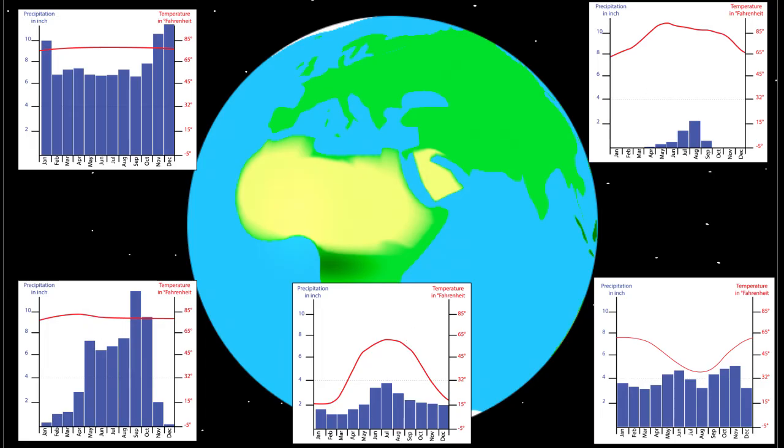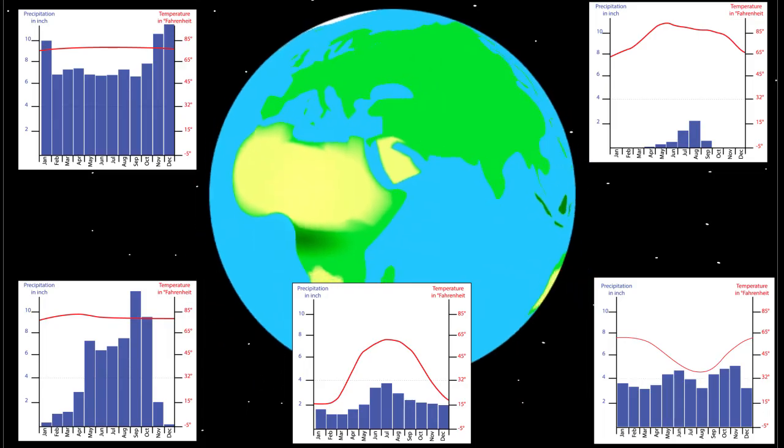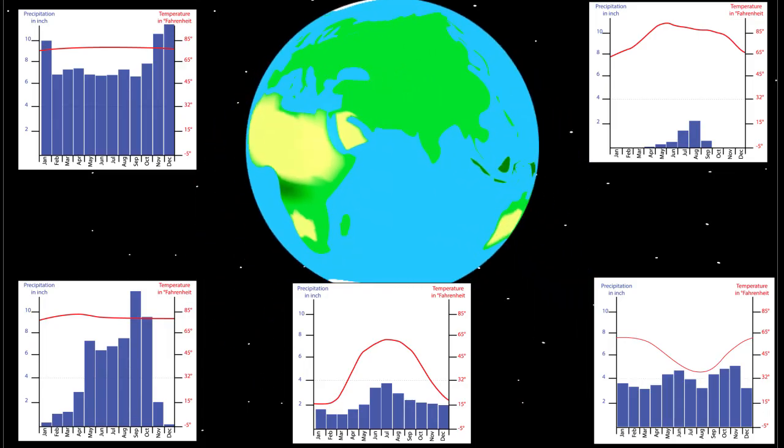When you are asked to match some climate graphs with some random places in the world, this is a possible way to operate. Choose the most extreme climate graph concerning temperature or precipitation pattern. In this case, we will choose the climate graph which shows the coldest place. This place is located at the most distant place from the equator.